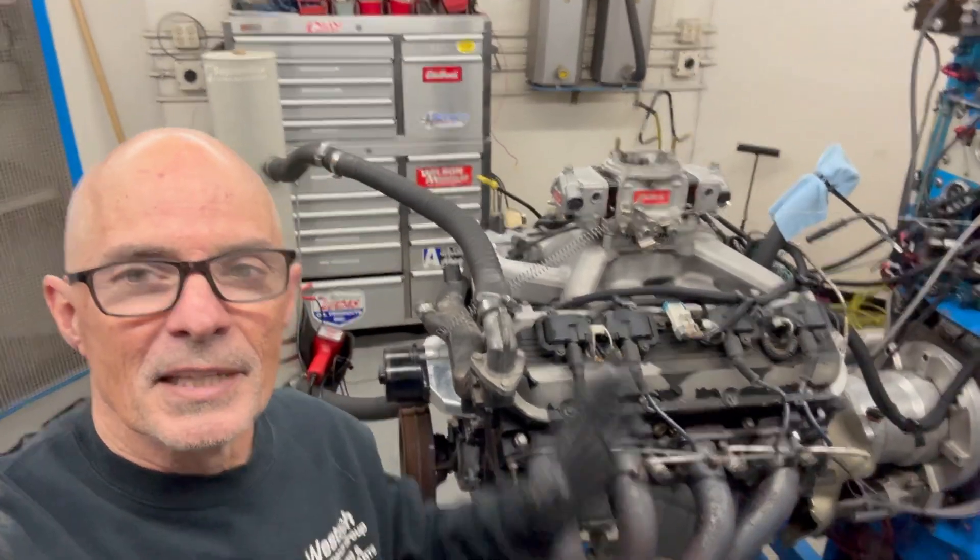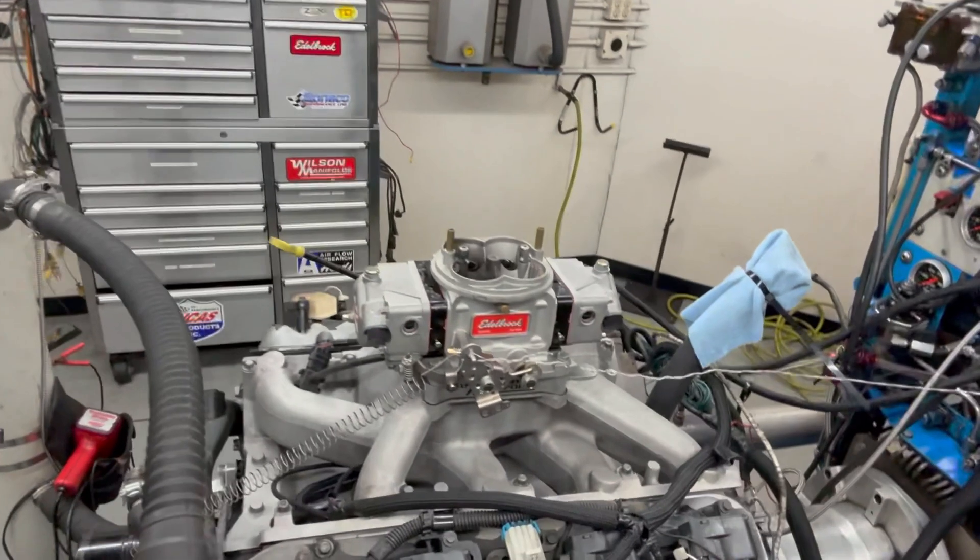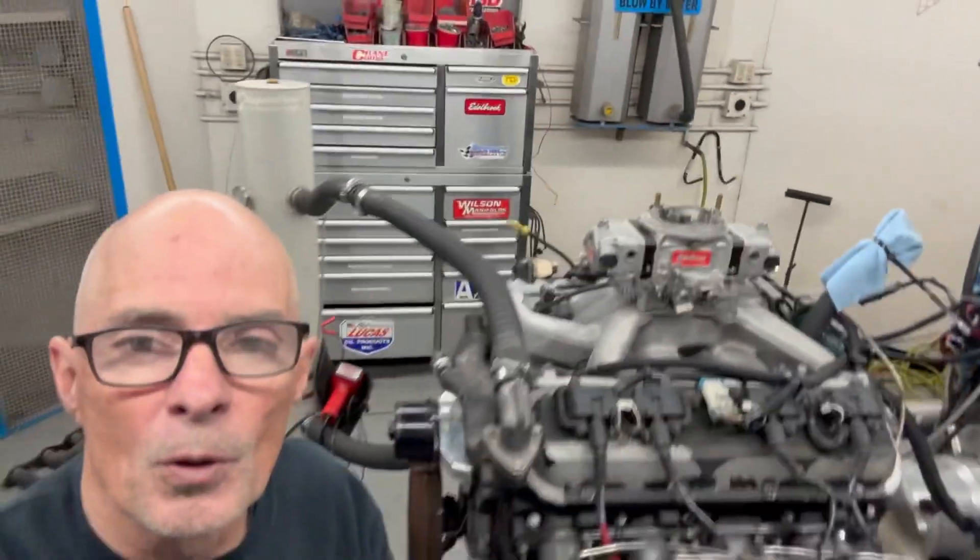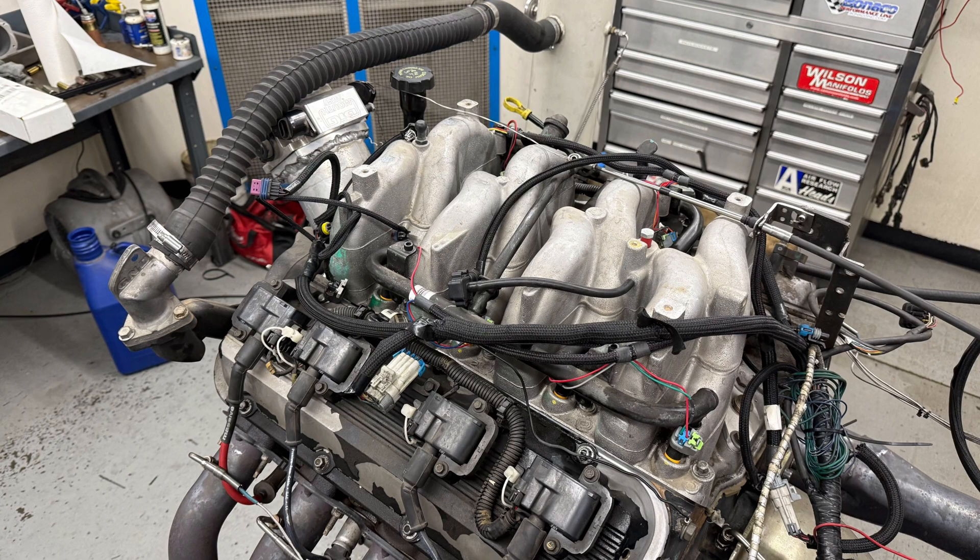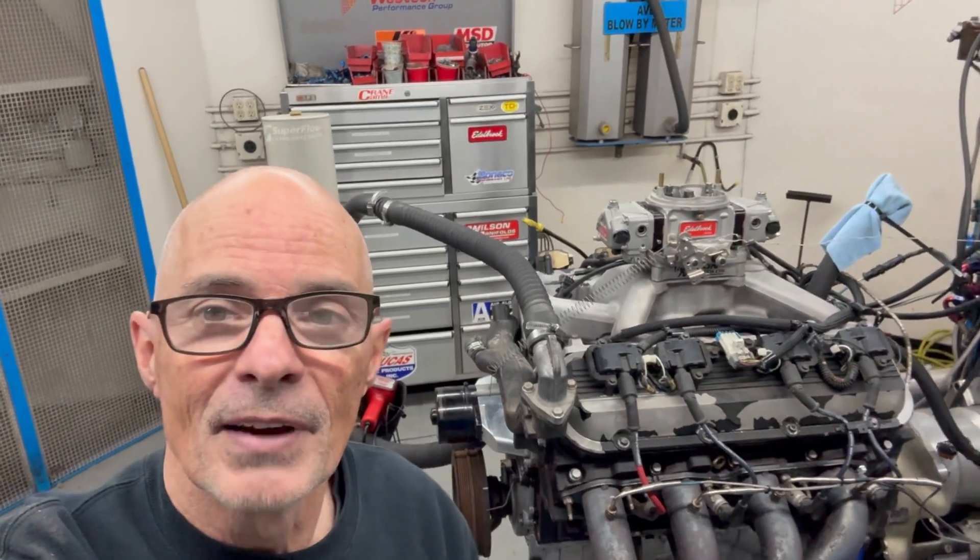We've got the Dart manifold on. We've got an Edelbrock VRS carburetor, it's an 850, so it's more than big enough for what we're doing. We're going to make some pulls with a carbureted combination to see how it compares to the factory ported EFI that I got from Amos. Let's fire this thing up and find out what happens.